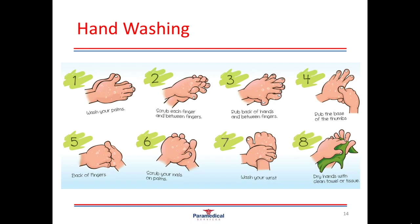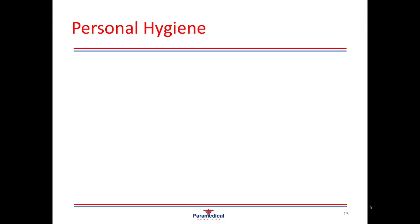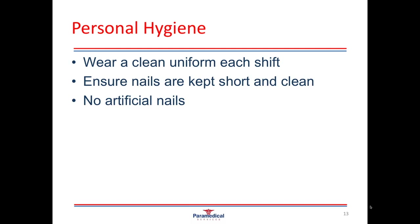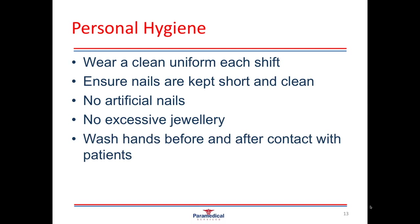Personal hygiene is another important aspect of infection control, and by practicing good personal hygiene we also help to break the chain of infection. It's very important to wear a clean uniform with each and every shift. Ensure that nails are kept short and clean — and this means no artificial nails either. Artificial nails, long nails, and excessive jewelry are a breeding ground for bacteria, and often these areas are not cleaned appropriately when performing good hand washing techniques. So keep nails short, no artificial nails, and no excessive jewelry.